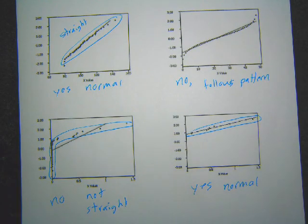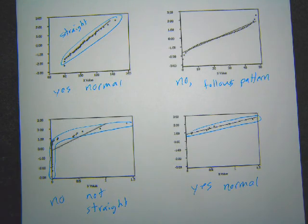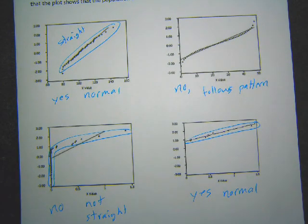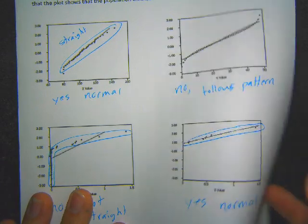This is what statisticians do — they collect their sample data, check the box plot for outliers, check the histogram to see if the shape looks bell-shaped, and then graph the normal quantile plot. If it makes a relatively straight line, they can say yes, this is normal data and I can use all the normal distribution techniques. If it's not very straight, they have to use more advanced techniques — which in intro stats we thankfully don't have to cover.